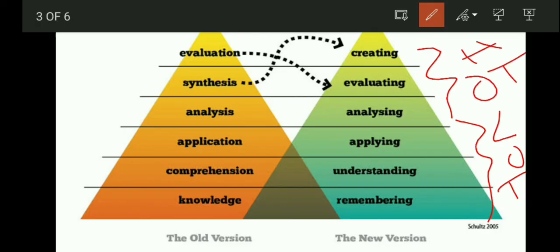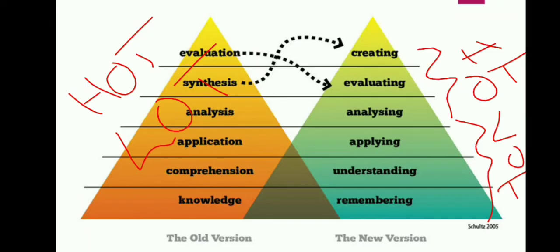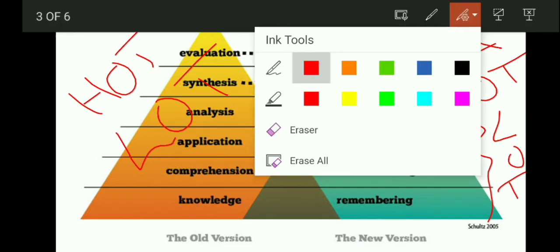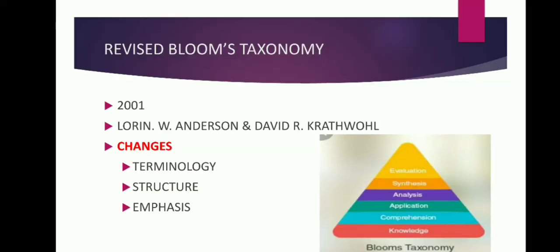HOTS — Higher Order Thinking: Creating, Evaluating, Analyzing. LOTS — Lower Order Thinking: Applying, Understanding, and Remembering. This is a very simple overview of Revised Bloom's Taxonomy. Thank you.